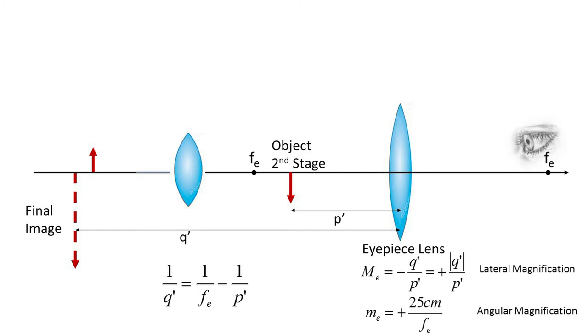1 over q prime equals 1 over FE minus 1 over p prime. The second stage magnification may be determined from the ratio of minus q prime over p prime. Since q prime is negative, i.e. the final image forms to the left of the eyepiece lens, the magnification of the second stage has an overall positive sign and the image maintains the inversion from the first stage.